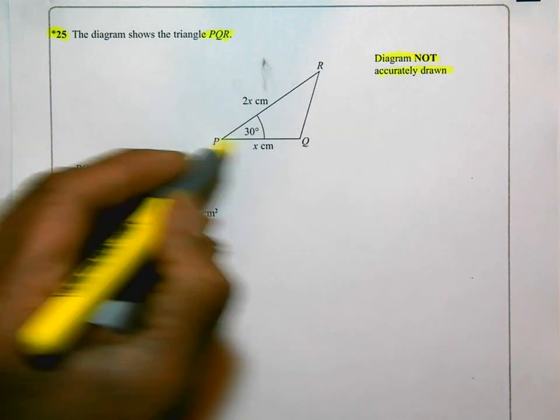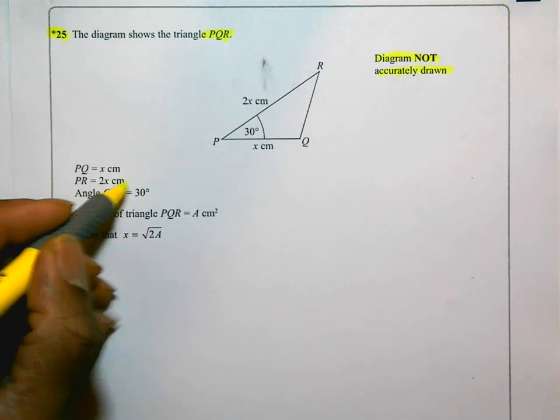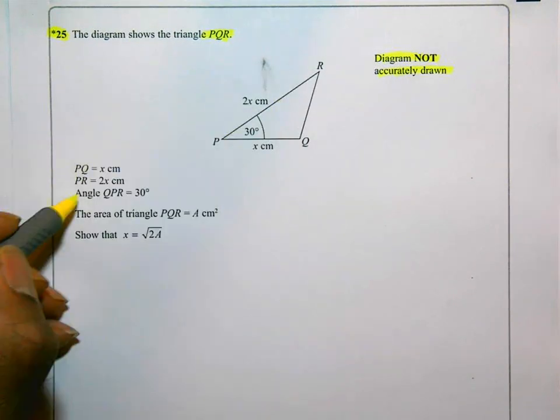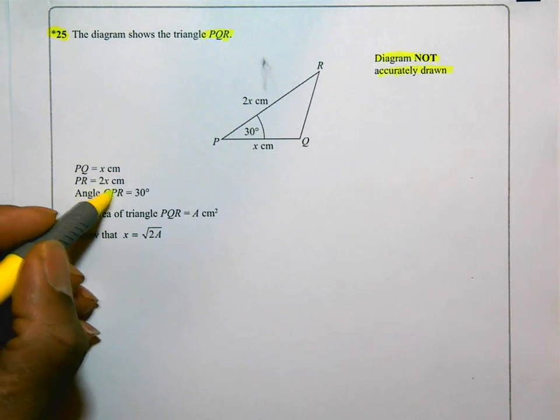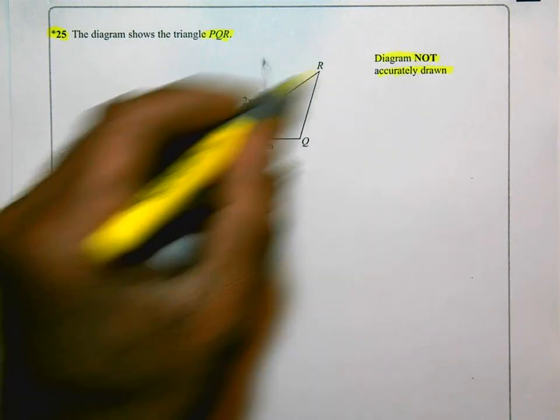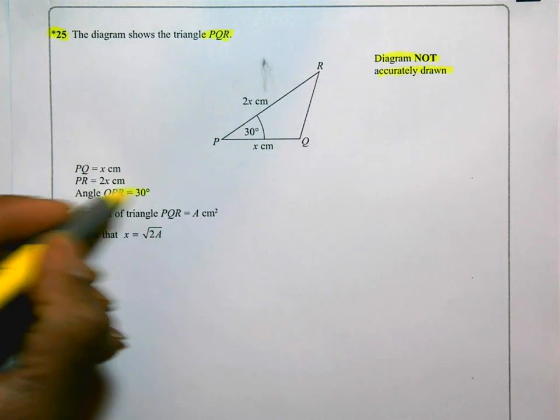PQ is X. I can see that there. PR is 2X. I can see that there as well. And the angle QPR, Q to P to R, is 30 degrees. Yep, all of that is okay.